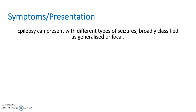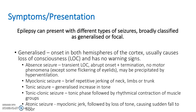Epilepsy can present with different types of seizures, classified as generalised or focal. Generalised seizures occur in both hemispheres of the cortex, usually cause loss of consciousness, and don't have warning signs. These can be further split into absence seizures, which are a transient and quite quick loss of consciousness that comes on abruptly, with very few motor symptoms except the eyelids may flicker.